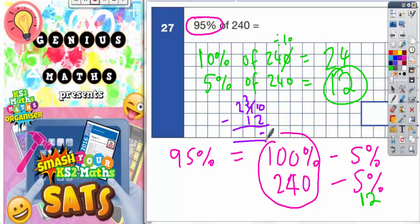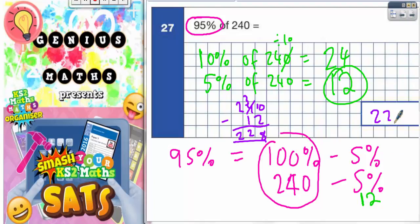10 take away 1, 10 take away 2 is 8, 3 take away 1 is 2, and 2 take away nothing is 2. So your final answer is 228.